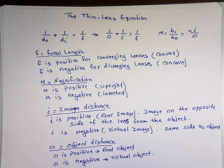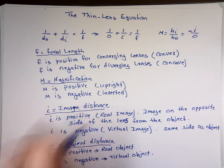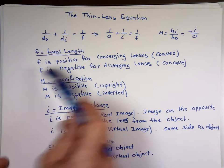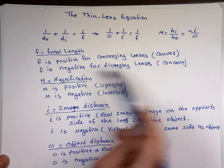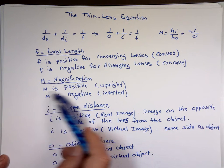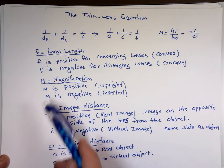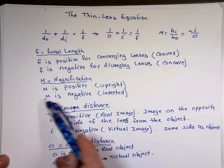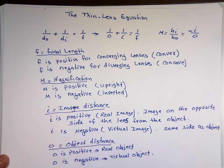Let me apply these sign conventions with an example. F is positive means converging lens; F is negative means diverging. Magnification M is positive means upright; magnification is negative means inverted.